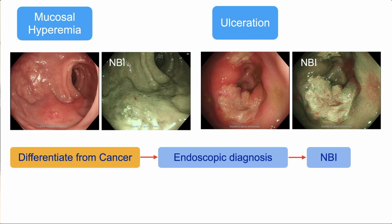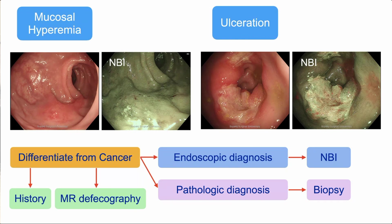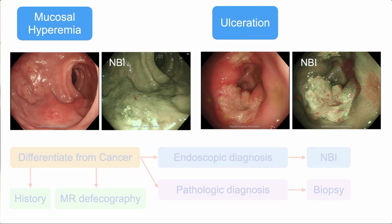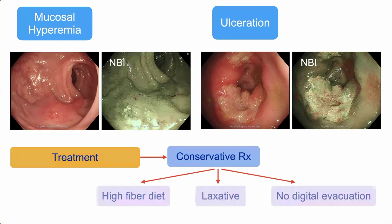After endoscopic diagnosis of solitary rectal ulcer syndrome, we also take a biopsy to confirm the diagnosis and ask the patient more history, especially about digital evacuation, and also obtain a functional study by MR defecography. After the diagnosis is confirmed, conservative treatment is the mainstay for our patients, starting with recommended high-fiber diet and laxatives, and the main treatment is to ask the patient to stop trauma to the mucosa — no digital evacuation.